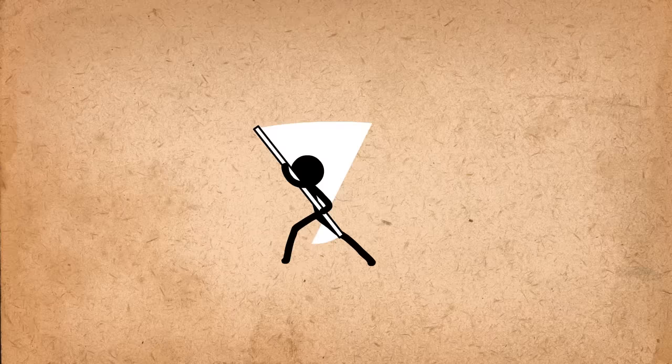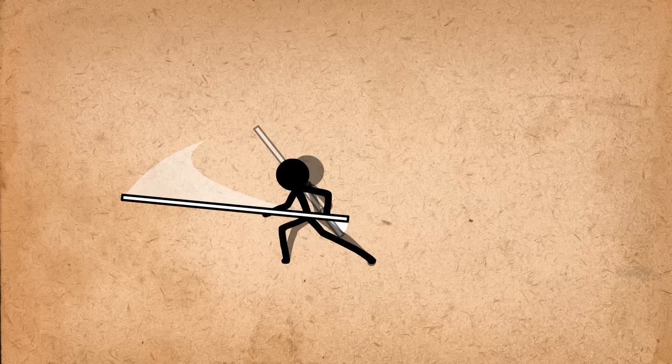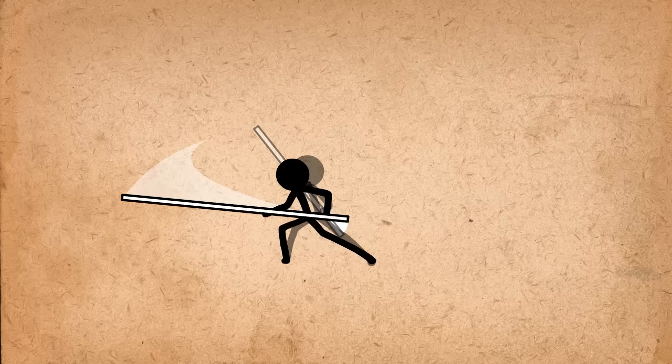When movements are very fast, you can add arcs in the form of a smear. Take the beginning and end pose and draw an arc in between and fill it in the same color as the object, maybe slightly transparent or fragmented towards the end of the action.